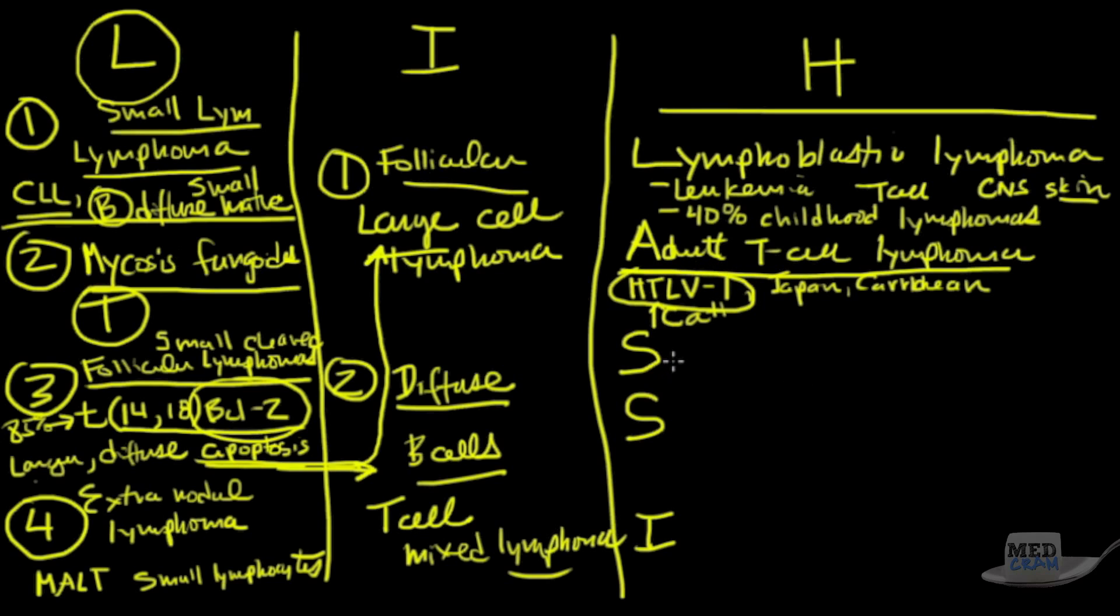All right. The S stands for Sézary syndrome. I basically just want you to think of Sézary syndrome as a more aggressive form of mycosis fungoides. It's a malignant form. Instead of just staying in the skin, it spreads. And remember that mycosis fungoides is a T cell lymphoma. Therefore, Sézary syndrome is also a T cell lymphoma, and it's found peripherally in the blood.